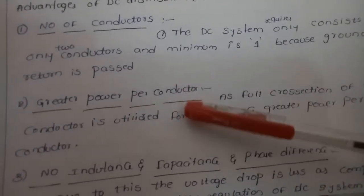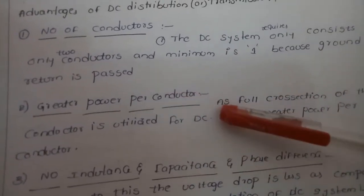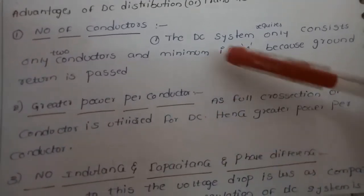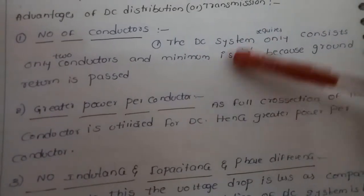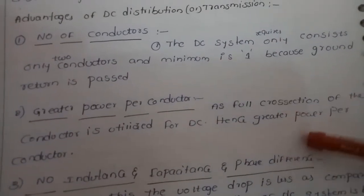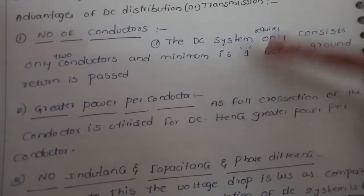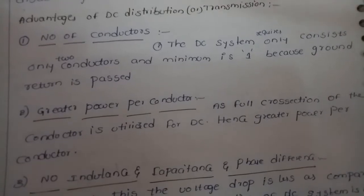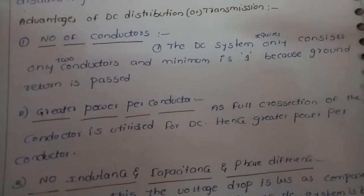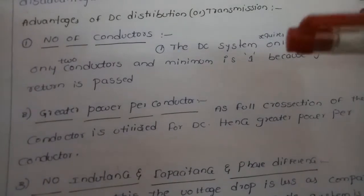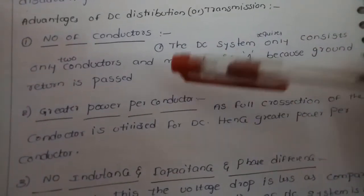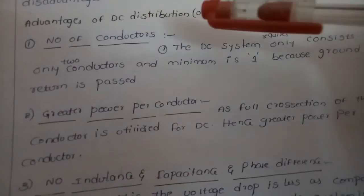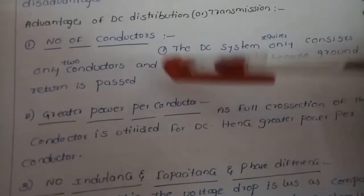Another advantage of DC distribution is greater power per conductor, because the full cross-section of the conductor is utilized for DC. In AC systems, due to the skin effect, only the outer surface of the conductor carries current, so less power per conductor is available compared to DC.